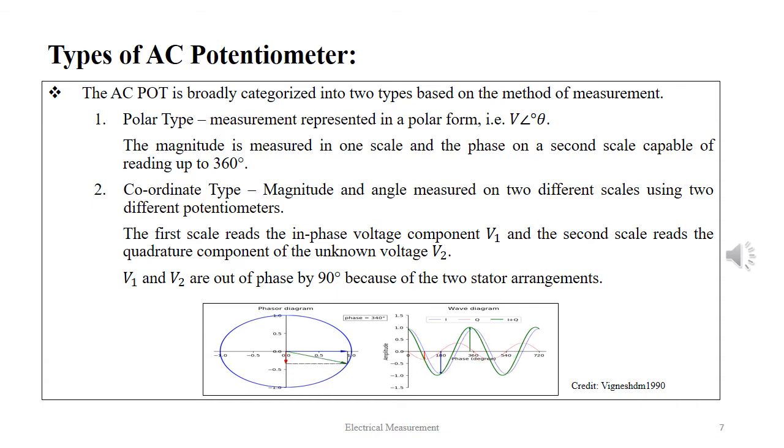And secondly, coordinate type. Magnitude and angle measured on two different scales using two different potentiometers. The first scale reads the in-phase voltage component V₁ and the second scale reads the quadrature component of the unknown voltage V₂. V₁ and V₂ are out of phase by 90° because of the two stator arrangements.